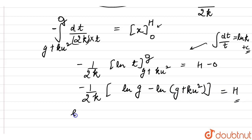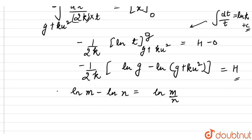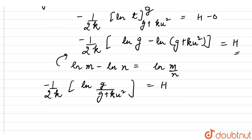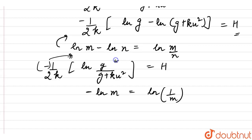Let's take minus sign into the power of ln g. We know minus ln m equals ln 1 upon m. So let's reciprocate these terms. We get 1 upon 2k ln g plus k u squared divided by g.